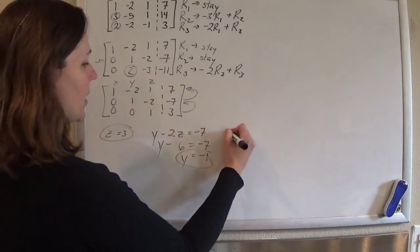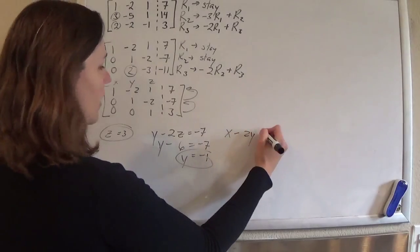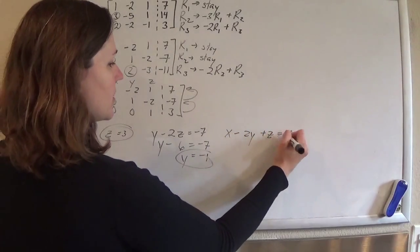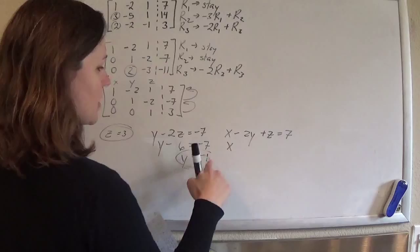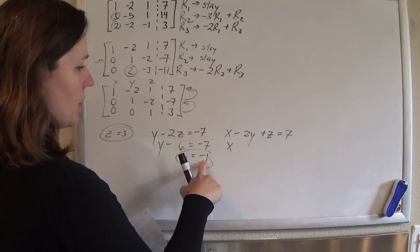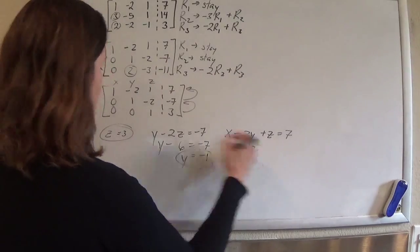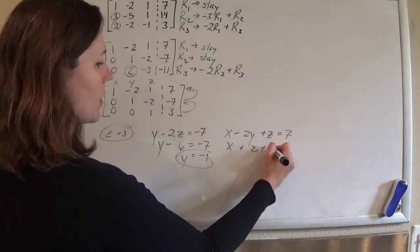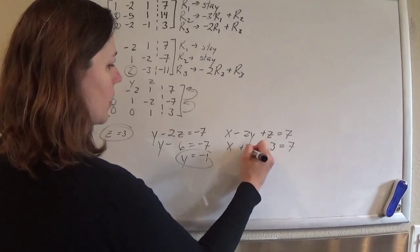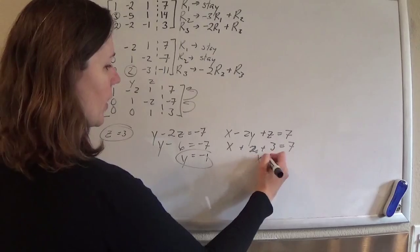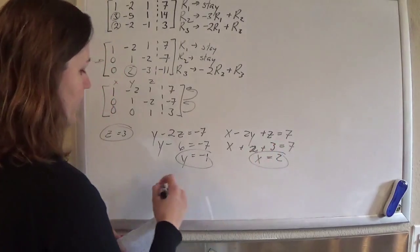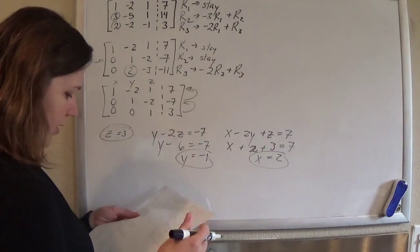And we're going to say x minus 2y plus z is 7. So x plus 2 plus 3 equals 7. So x plus 5. So x is 2. And we did it. I do. Yes.